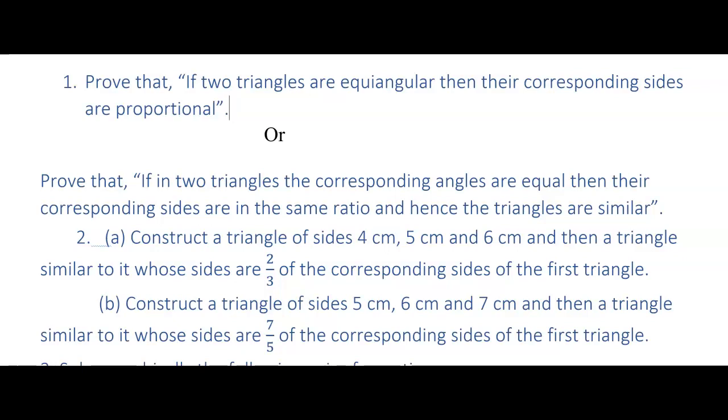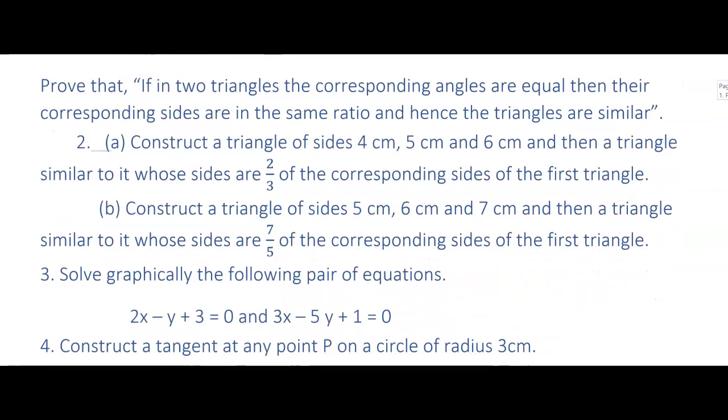See students, first problem: Prove that if two triangles are equiangular then their corresponding sides are proportional. The same theorem can also be asked in the other form. Both the questions are same, the way of asking questions are different but answer remains same. This is one of the very most important theorems. This question has been asked in the last year supplementary board exam.